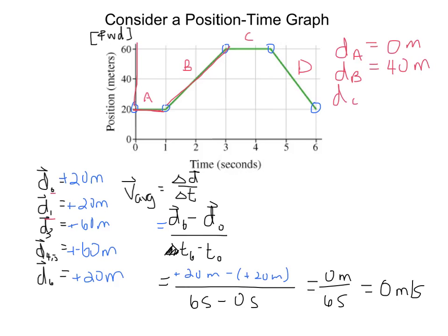What about C? Again, we have that horizontal line. So we're actually not traveling any distance at all.